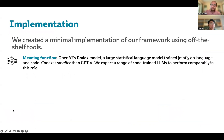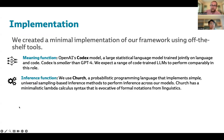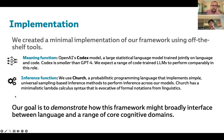As a proof of concept, we created a minimal implementation of the framework using off-the-shelf tools. We use OpenAI's Codex model as a meaning function — Codex is a GPT variant fine-tuned on a large corpus of source code from the internet, though we posit that similar, more modern LLMs would work similarly in this role. We also use Church as the inference engine — Church is a probabilistic programming language with syntax evocative of formal notations from linguistics, supporting a variety of sample-based inference procedures. Our goal is to demonstrate how this framework might broadly interface between language and a range of core cognitive domains, and the rest of this talk is basically going to be examples of this framework in action.